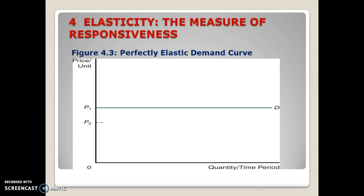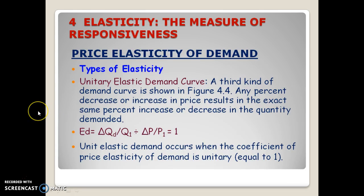Now let's look at a perfectly elastic demand curve. When there's a change in price, consumers will buy nothing of it because they can buy something else as a perfect substitute. Then we have unitary elastic, which means when there's a change in price — say the price goes up 15% — people buy 15% less. The exact percentage change is reflected in both price and quantity.